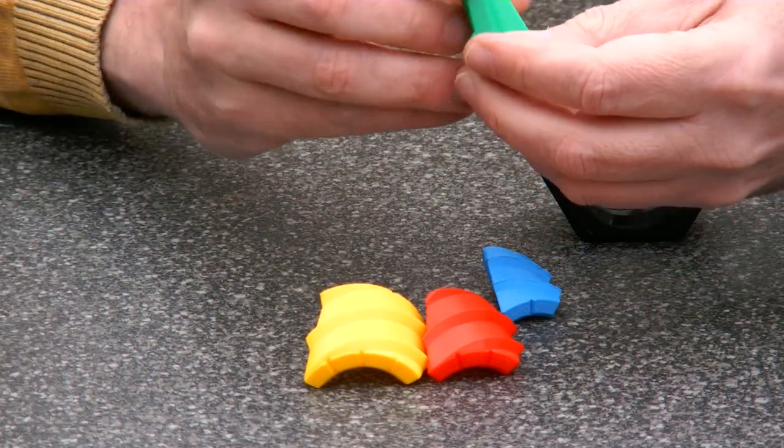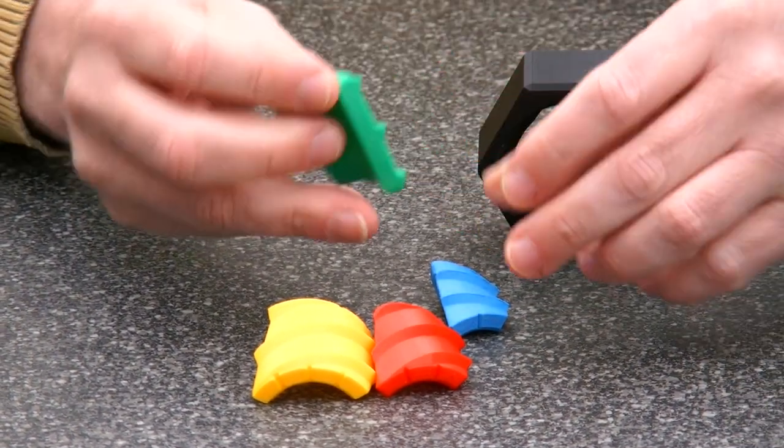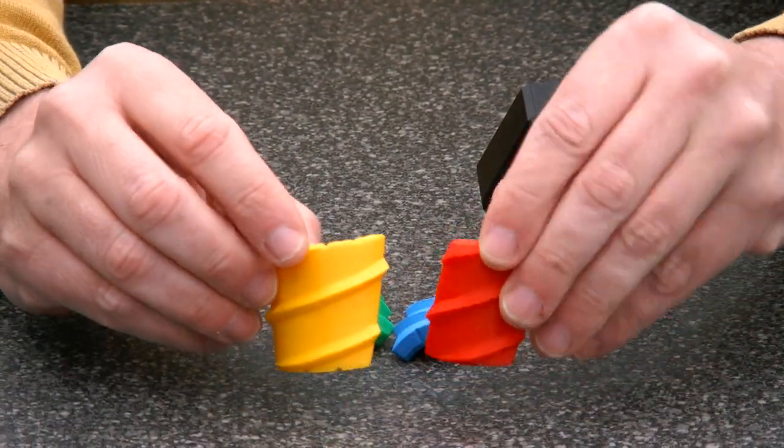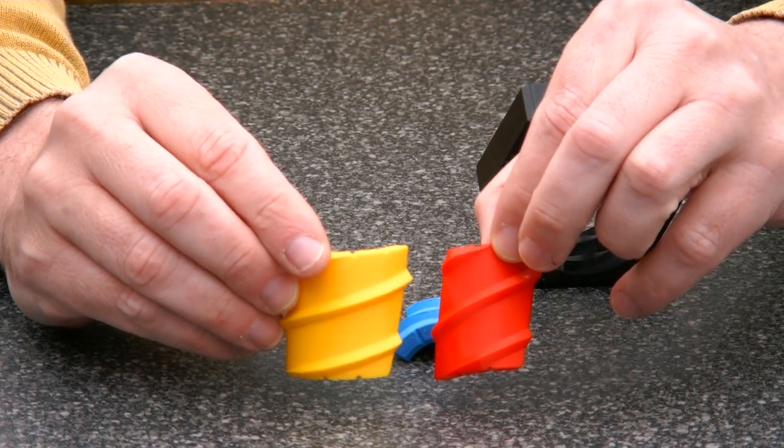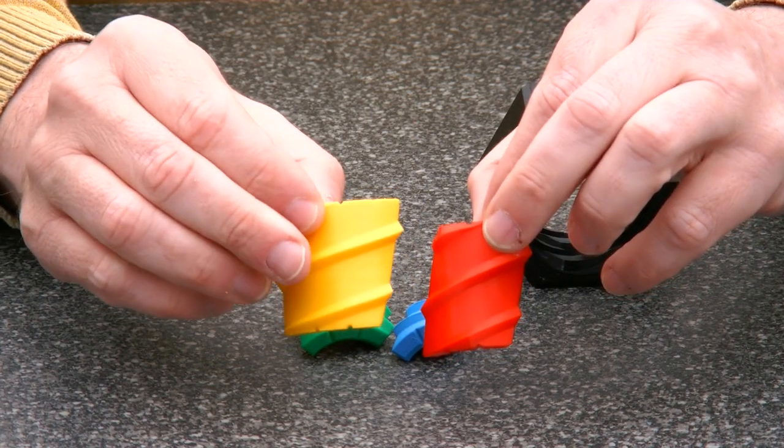The pieces themselves have a helical shape as well. And if you look carefully, you see that the angle for the red and the yellow piece, the angle of the thread is different.